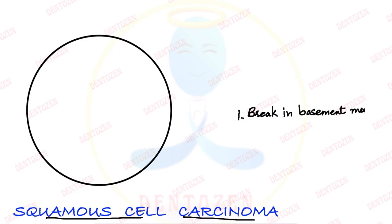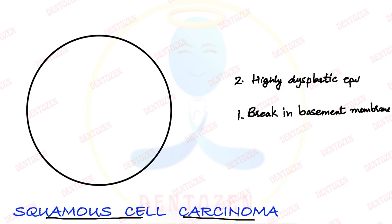Which cells are breaking it? Squamous epithelial cells are breaking it. So the epithelium is highly dysplastic — these cells show the features of dysplasia that we discussed in epithelial dysplasia. And after breaking the basement membrane, these cells come into the connective tissue — that is the third feature: dysplastic cells invading connective tissue.